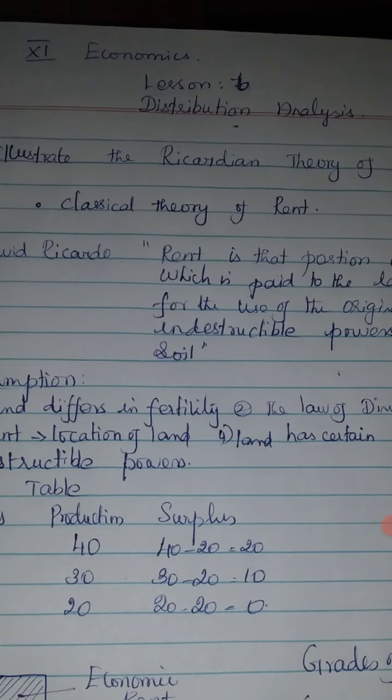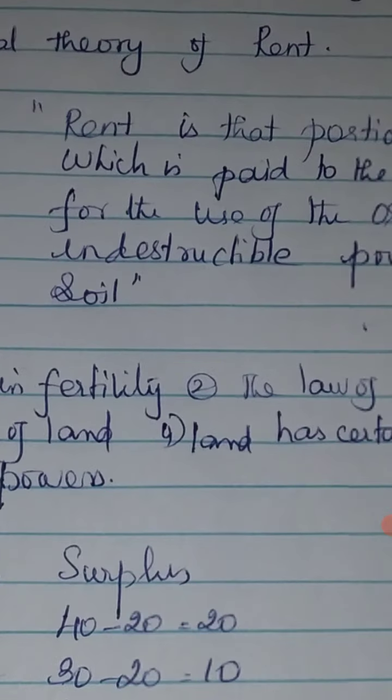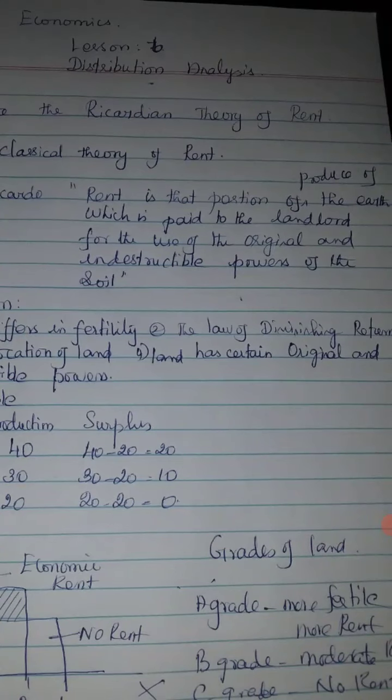Classical economist David Ricardo's rent theory is called the classical theory of rent. The definition of rent is: rent is the portion of the produce of the earth which is paid to the landlord for the use of the original and indestructible powers of the soil.